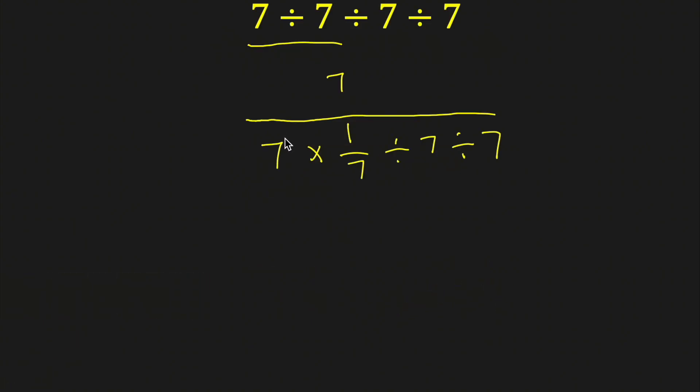7 times 1/7 is 1. 1 divided by 7 is simply 1/7th.